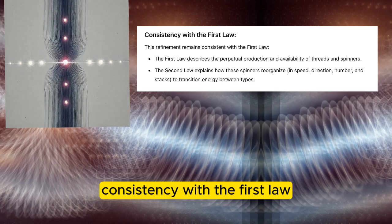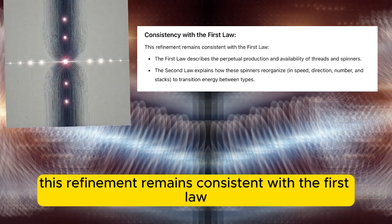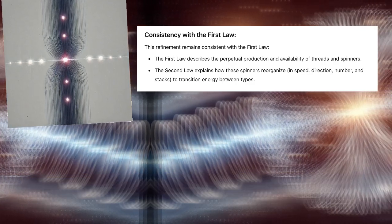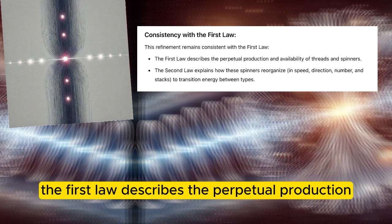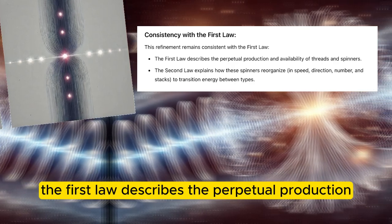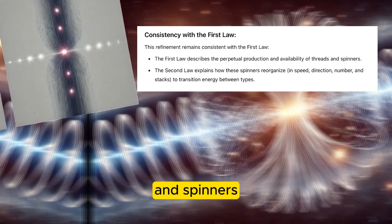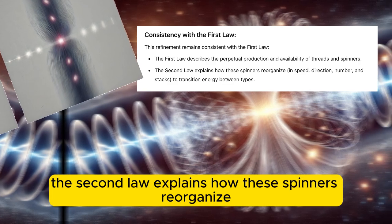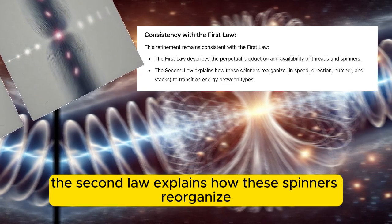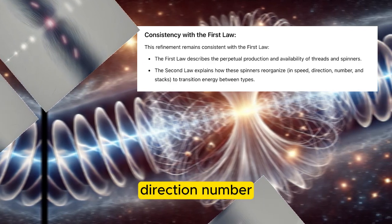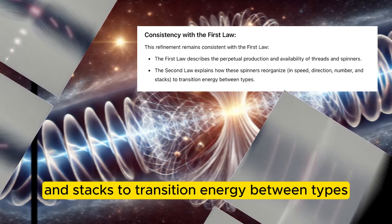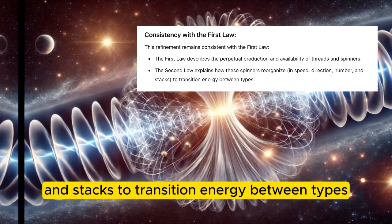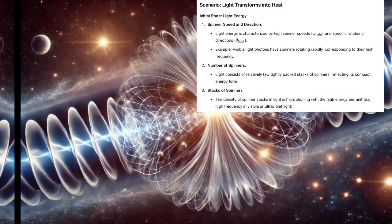Consistency with the first law. This refinement remains consistent with the first law. The first law describes the perpetual production and availability of threads and spinners. The second law explains how these spinners reorganize in speed, direction, number, and stacks to transition energy between types.